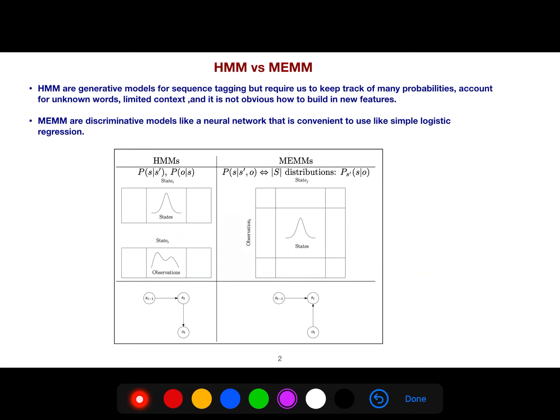HMM are generative models for sequence tagging, but require us to keep track of many probabilities, account for unknown words, limited context, and it is not obvious how to build new features. Maximum entropy Markov models are discriminative models, like a neural network that is convenient to use, like simple logistic regression.